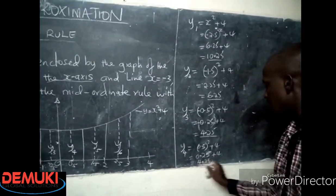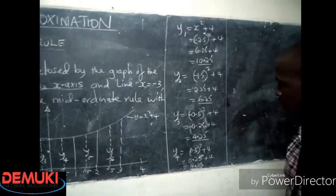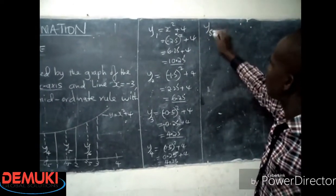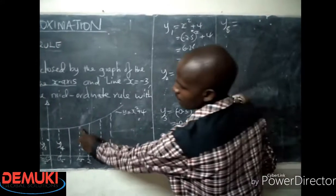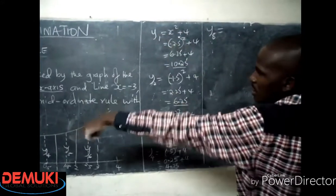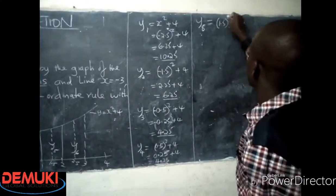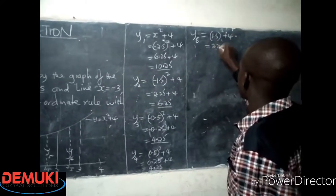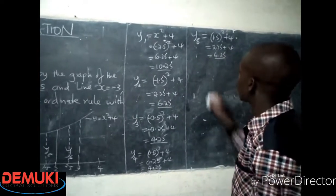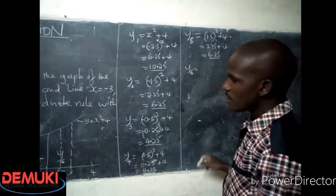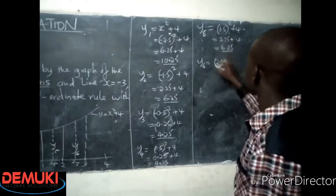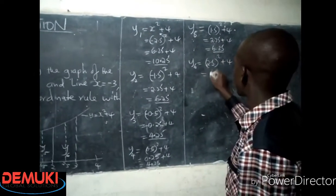And so this one becomes 0.25, positive 0.25 plus 4, and this will be 4.25. So we have now our y4 ordinate. So we get the fifth ordinate y5. The corresponding x value for y5 is 1.5, so I take 1.5, substitute it in this equation, the equation of the curve, so I have 1.5 squared plus 4. So this one becomes 2.25 plus 4, and this one becomes 6.25.